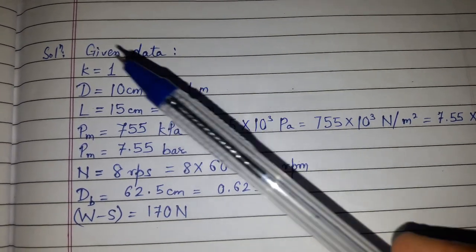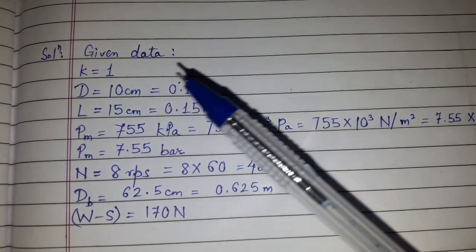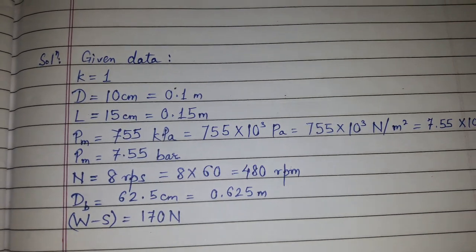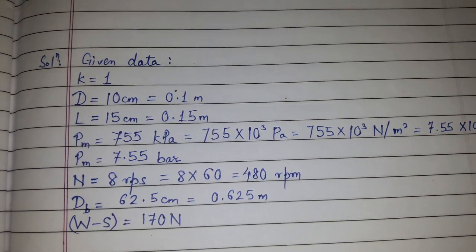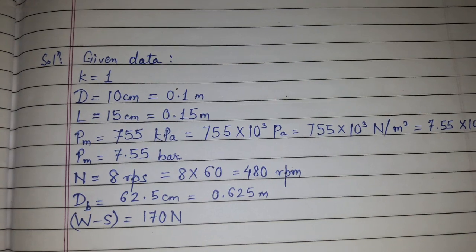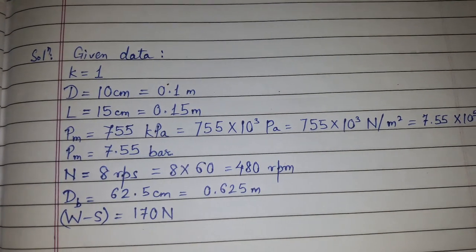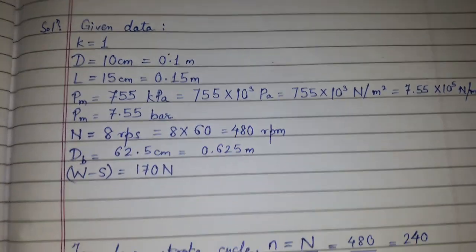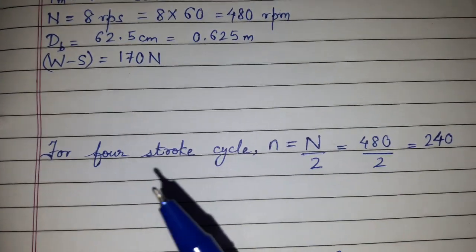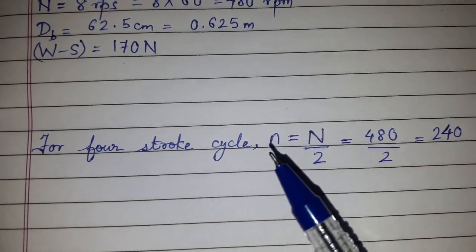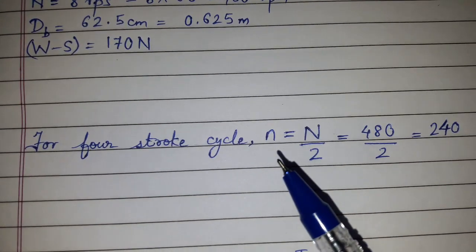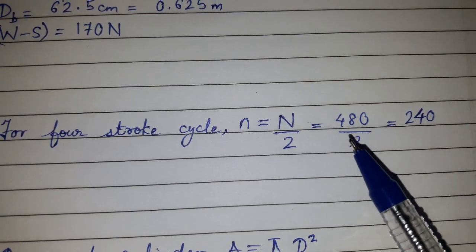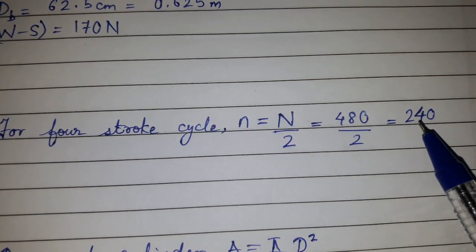For any doubts on units or data, please refer to my earlier video on the revision of formulas from chapter 2. Since this is a 4-stroke cycle engine, the number of power strokes per minute is n = N/2 = 480/2 = 240.